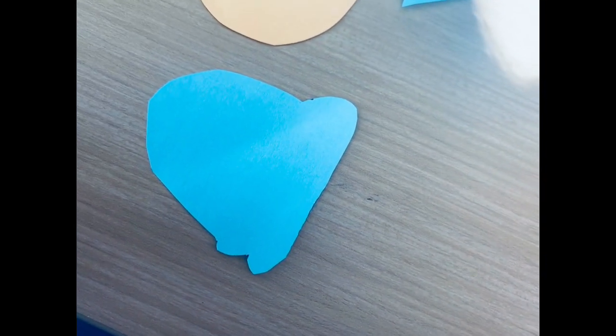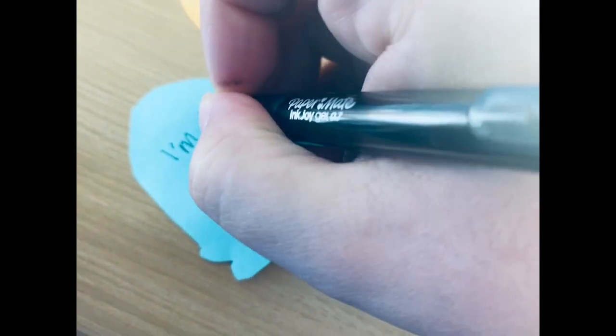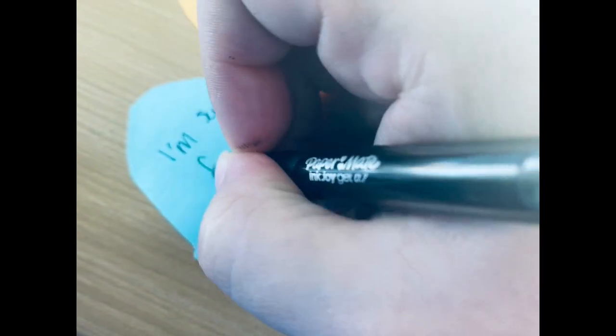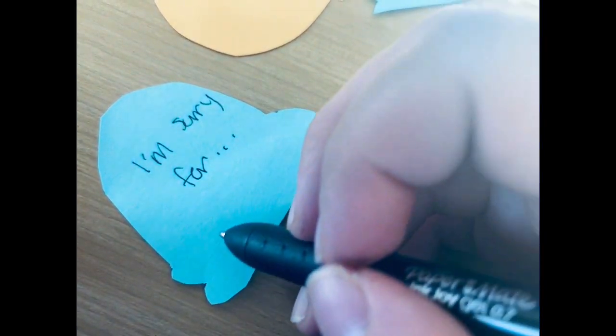So the first scoop of your apology ice cream cone is going to say 'I'm sorry for.' So this is your opportunity to say whatever you are sorry for.